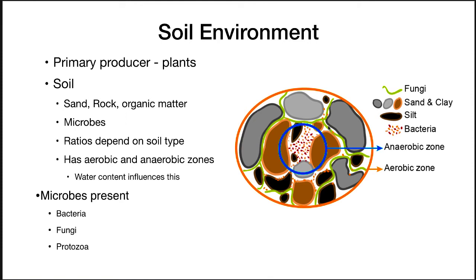The next environment we're going to move on to is soil. The primary producers of most terrestrial environments are plants — trees, grasses, bushes — which rain their plant litter down onto the ground. This gets absorbed into the soil and then degraded. Soil is not just organic material; it's also sand and rock. There are about a billion microbes per gram of soil, and the ratio of organic material, microbes, sand, and rock depends upon the soil type.